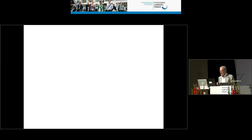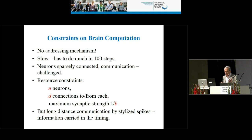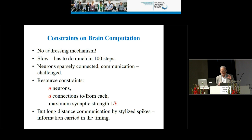Some basic facts about the brain. The most obvious way the brain differs from a digital computer is that it doesn't have anything resembling addressing — it doesn't seem to say 'go to memory location 37.' Second, the hardware is very slow: in maybe a hundred steps you have to do incredible things. The neurons are sparsely connected and communication-challenged — communication is a big bottleneck. That's good for analysis because what you put at the neurons isn't so critical; communication will slow you down.